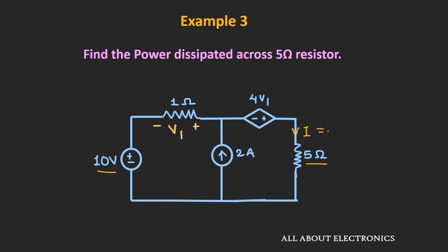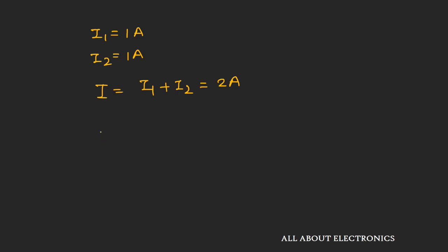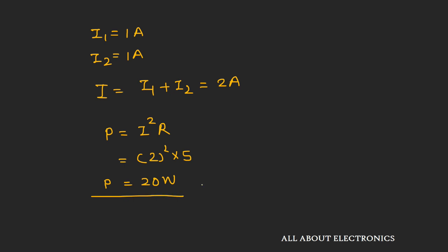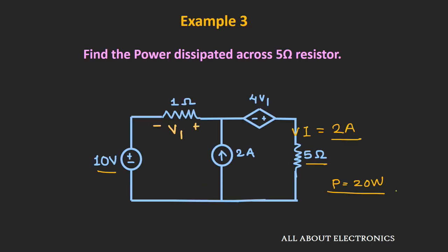The total current through the 5-ohm resistor is 2A. The power dissipated across the 5-ohm resistor is I²·R = 2² × 5 = 20 watts. In this way, using the superposition theorem, we can find the power dissipated across the 5-ohm resistor.